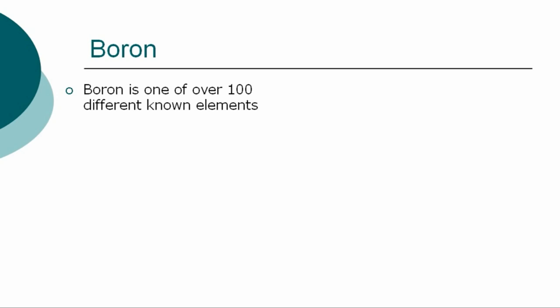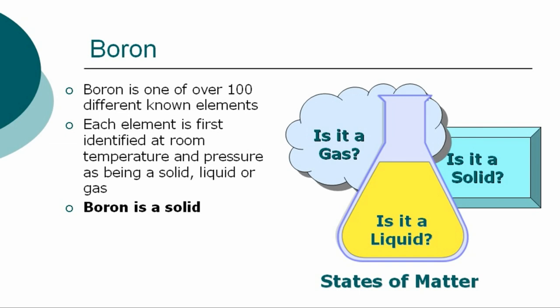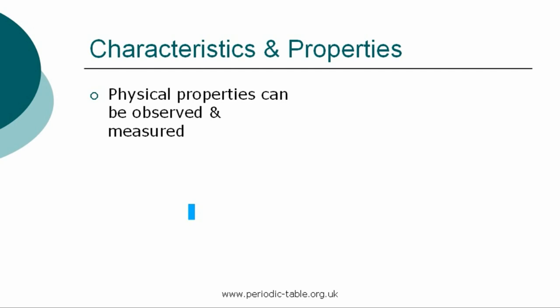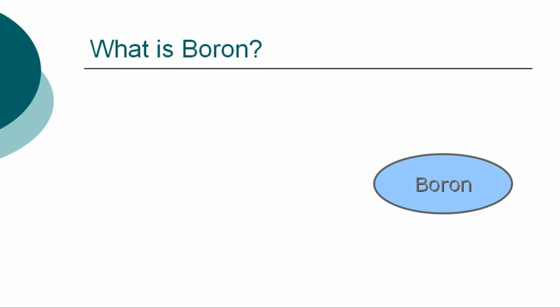The element boron is one of over 100 different chemical elements known to modern chemistry. Each element is first identified at room temperature and pressure as being a solid, liquid, or gas, referred to as states of matter. Boron is a solid at normal room temperature and pressure. Each element has physical properties that can be observed and measured, such as color, density, and odor. The chemical properties are the characteristics that determine how a substance will react with other substances, such as water or oxygen.